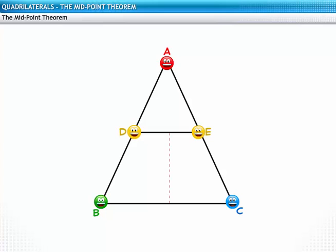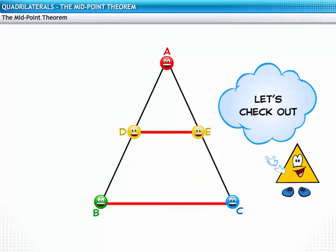D and E claim that the perpendicular distance between the line joining them and the line BC remains constant. That is, line DE is parallel to the line BC. Let's check if they are speaking the truth.